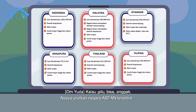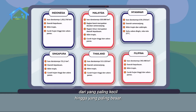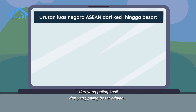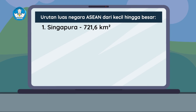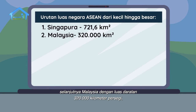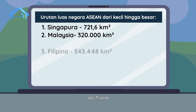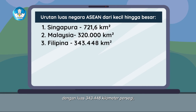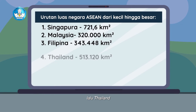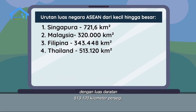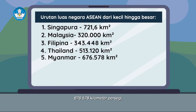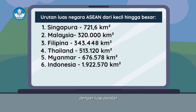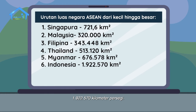Urutan luas negara ASEAN dari yang paling kecil hingga paling besar adalah: Singapura dengan luas 721,6 km persegi; Malaysia dengan luas daratan 320.000 km persegi; Filipina dengan luas 343.448 km persegi; Thailand dengan luas daratan 513.120 km persegi; Myanmar dengan luas daratan 676.578 km persegi; dan yang paling luas adalah Indonesia dengan luas daratan 1.922.570 km persegi.